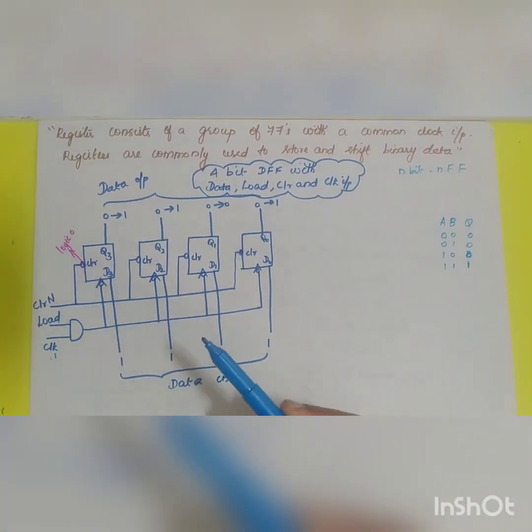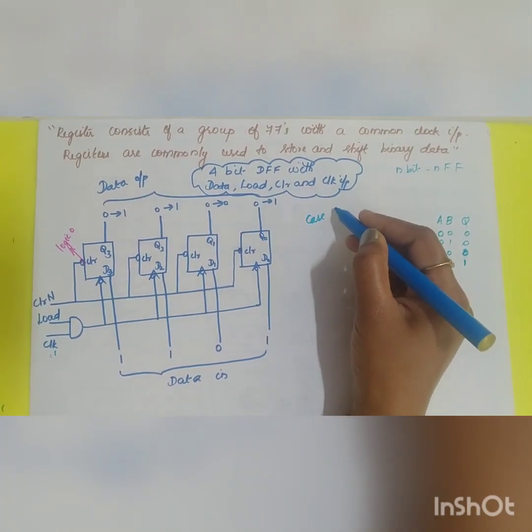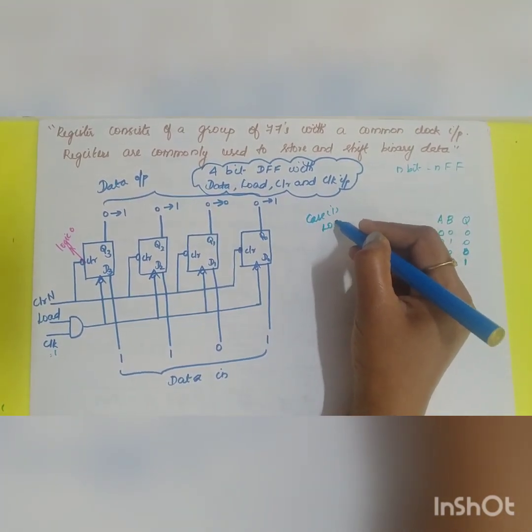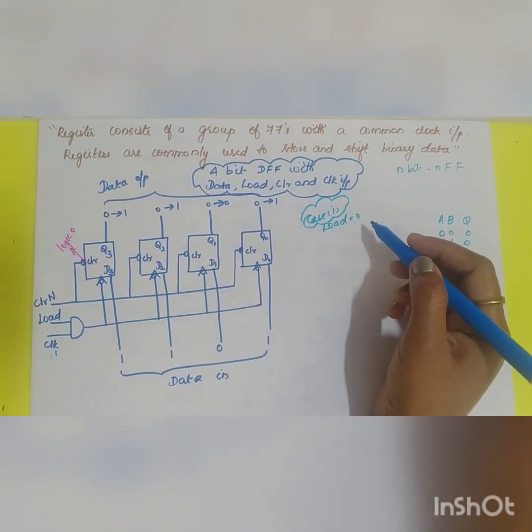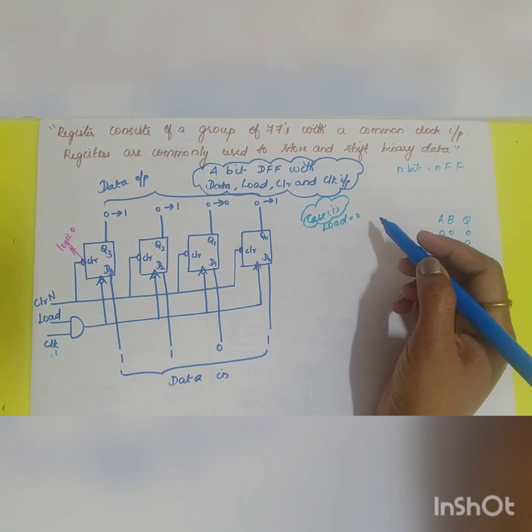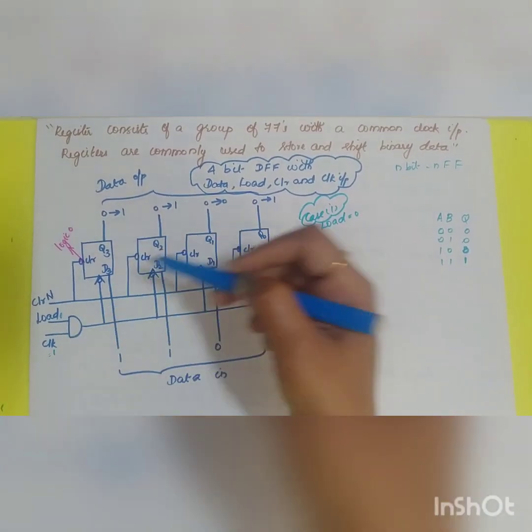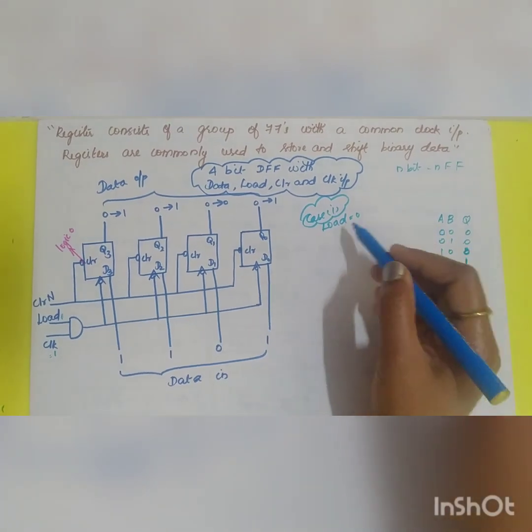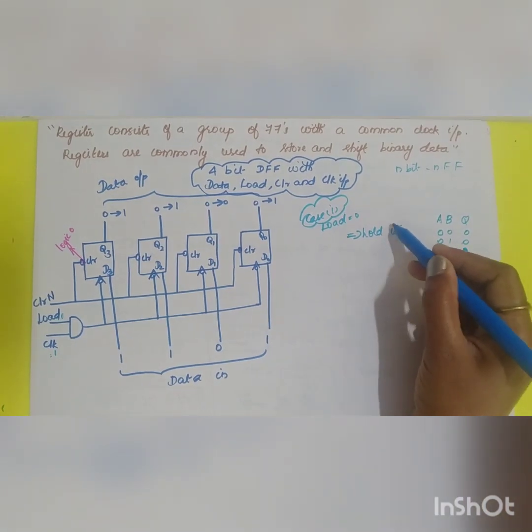Here the clock is equal to 1. Now you have two cases. Case 1: If load is equal to 0 what will happen? The register will not be clocked because if any one input is equal to 0 your output is going to be 0. So the register is not clocked and holds its present value.